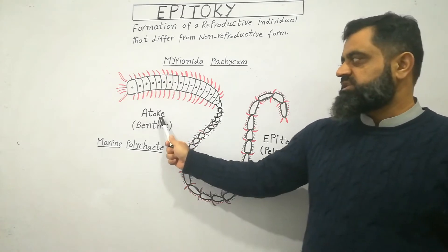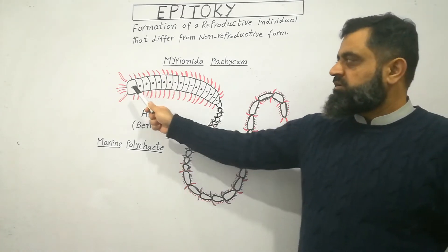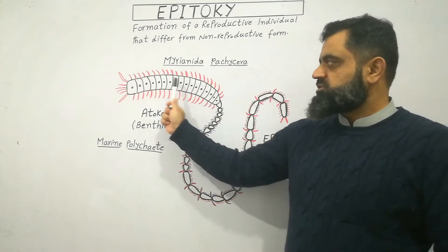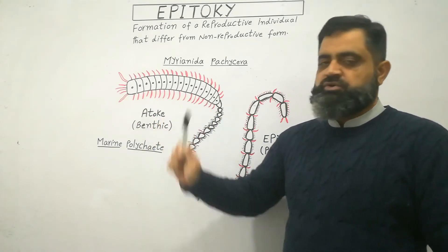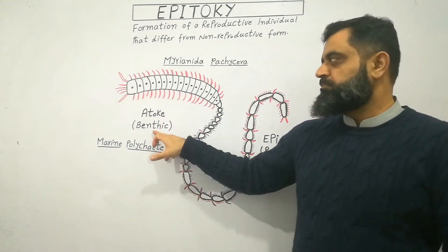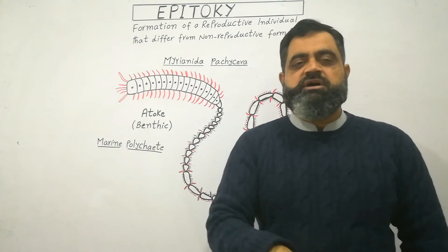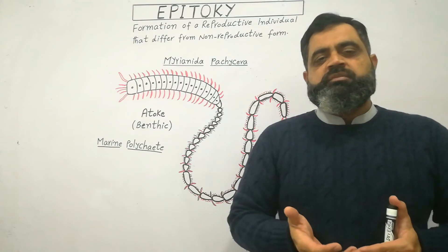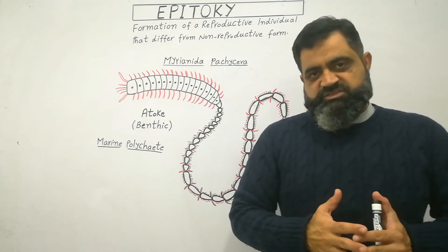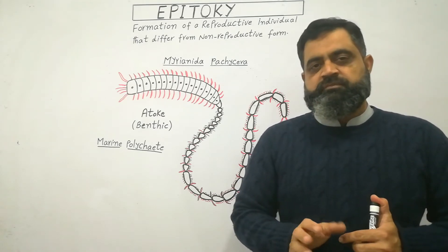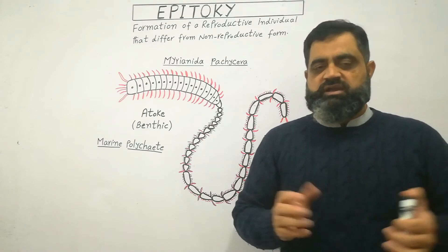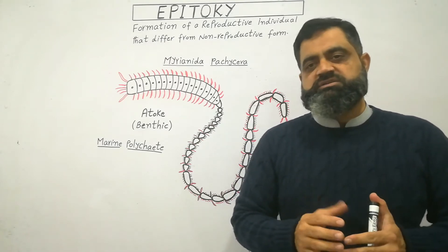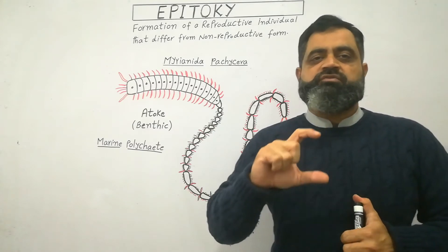The first body form is known as the atoke. From this area to this area, this body structure is known as the atoke, and this structure is benthic because it lives at the bottom of the ocean, where it performs all maintenance functions except reproduction.